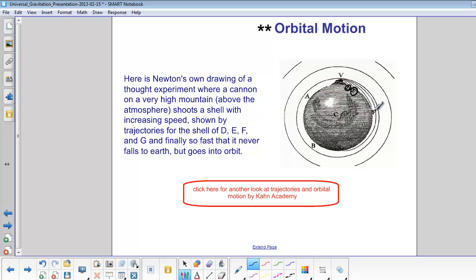Faster still, you might reach here, F. So he kept thinking, what if it went fast enough where it kept falling, but since the Earth is round, the Earth curved away, and it just makes it back to the same spot, so that it never falls to Earth but goes into orbit.